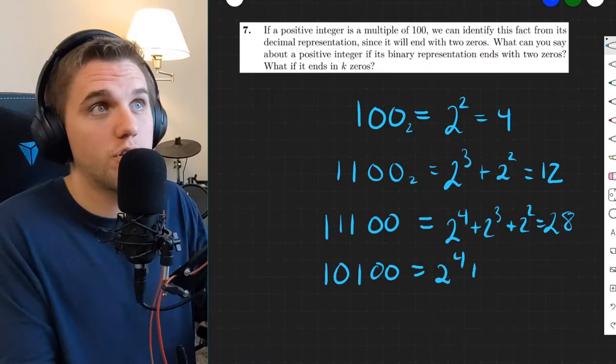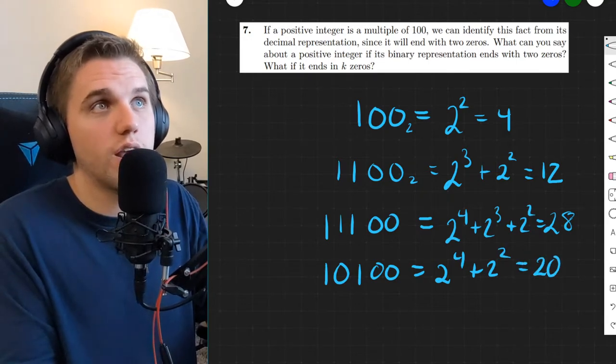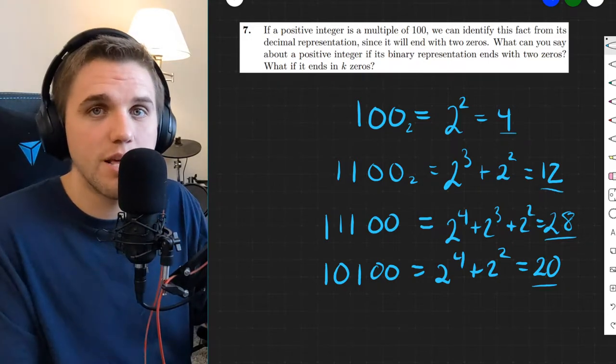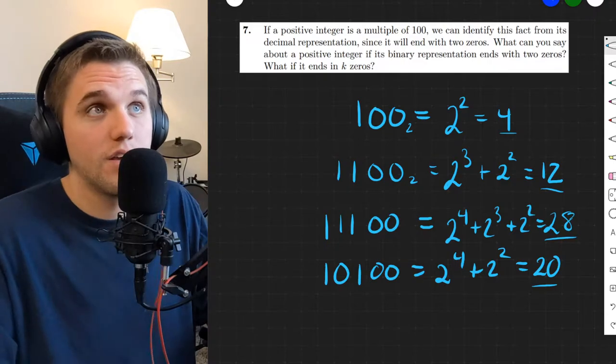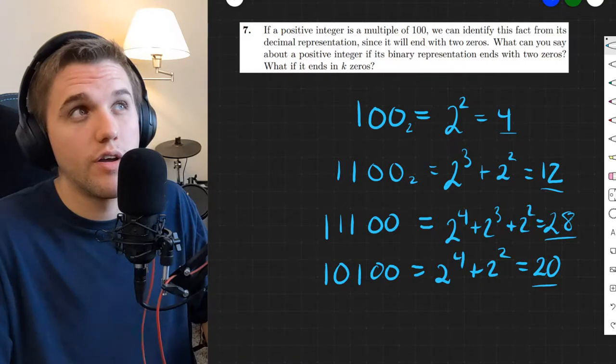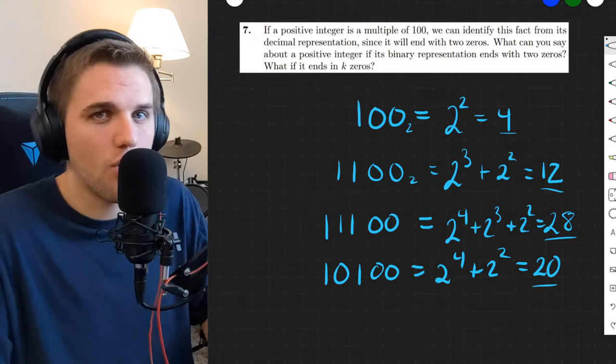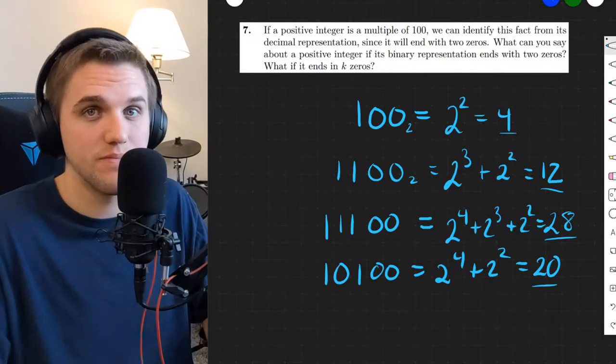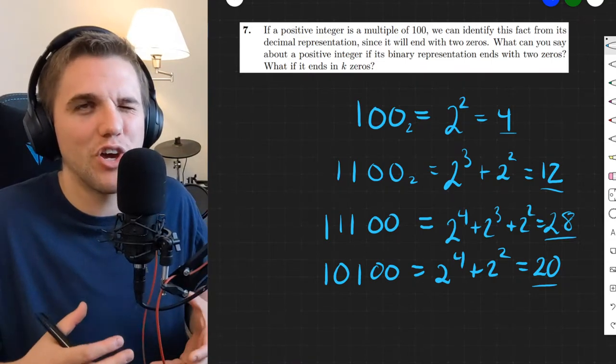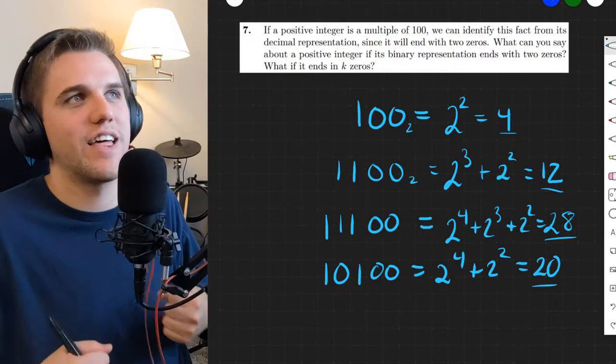So what do you notice about all of these numbers in base 10? Do you notice any patterns? Well, they're all even. They're also technically all divisible by 4. But maybe those are coincidences. How do we know whether or not these patterns are actually real? Well, you can keep trying and convince yourself eventually, but that's not solidifying with 100% certainty that this is true.